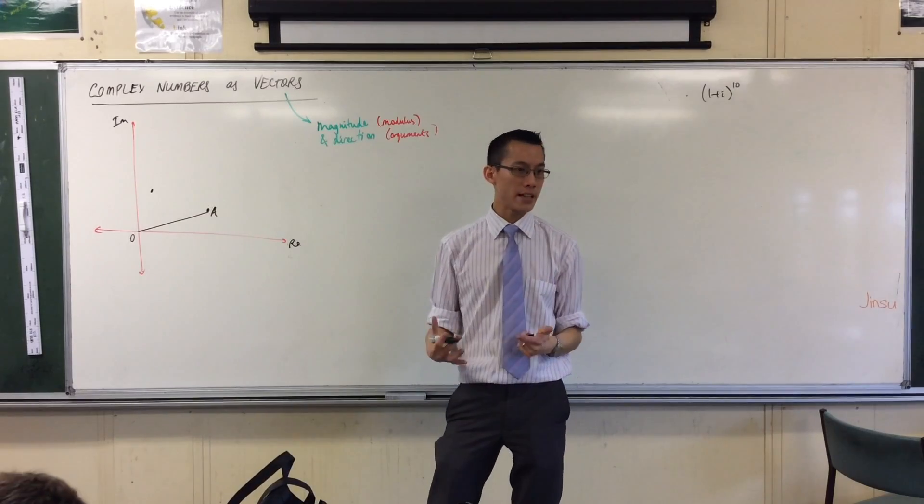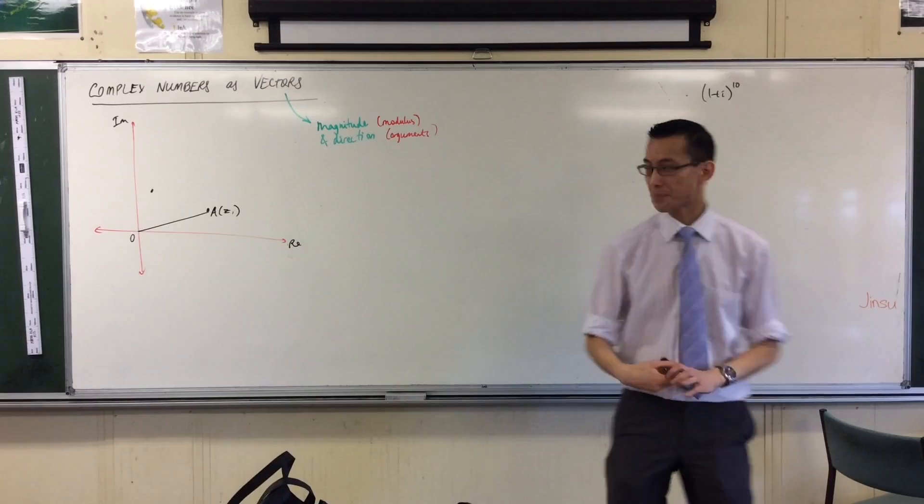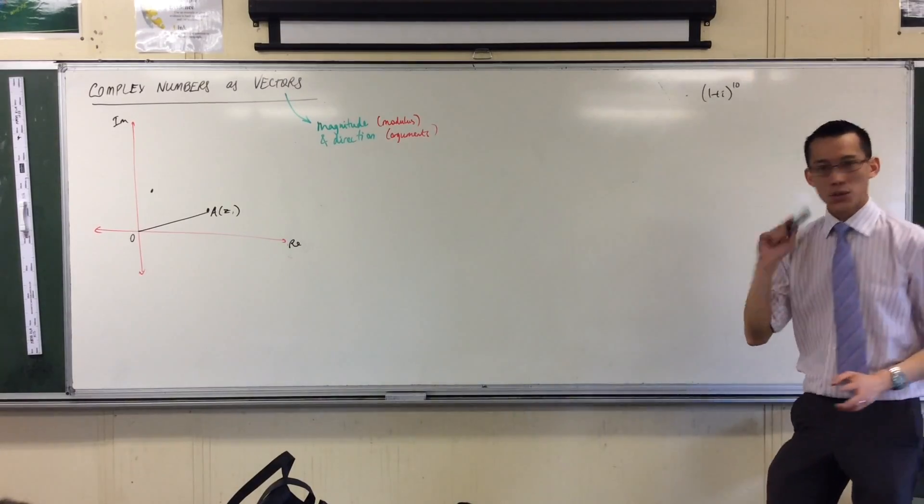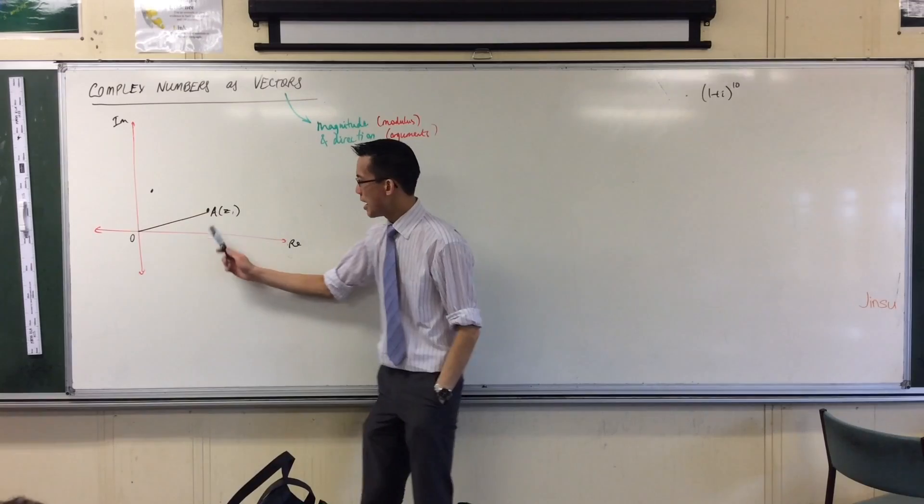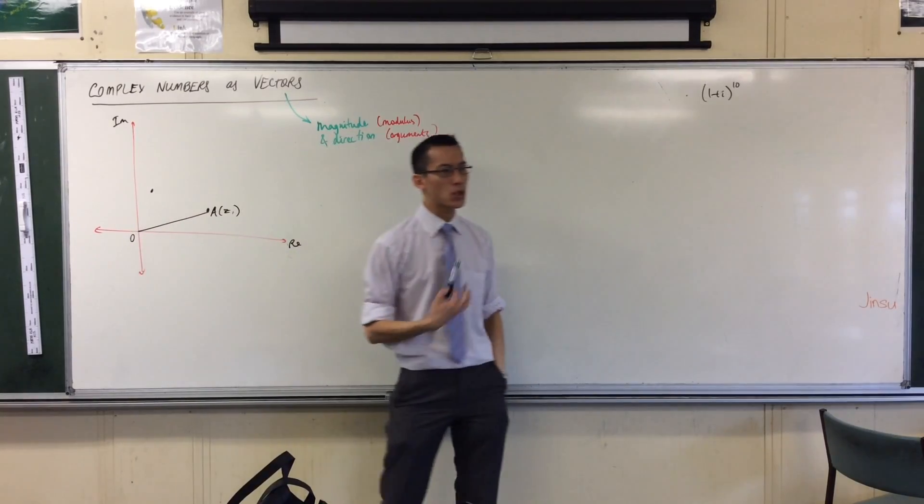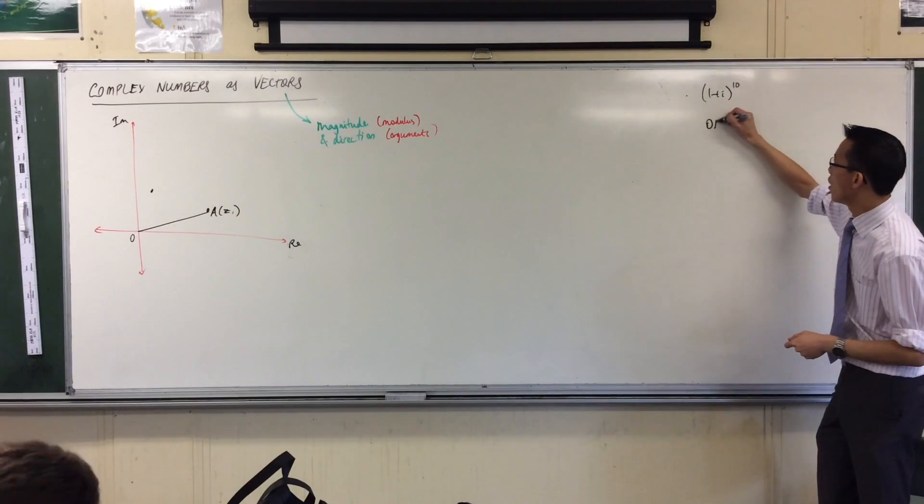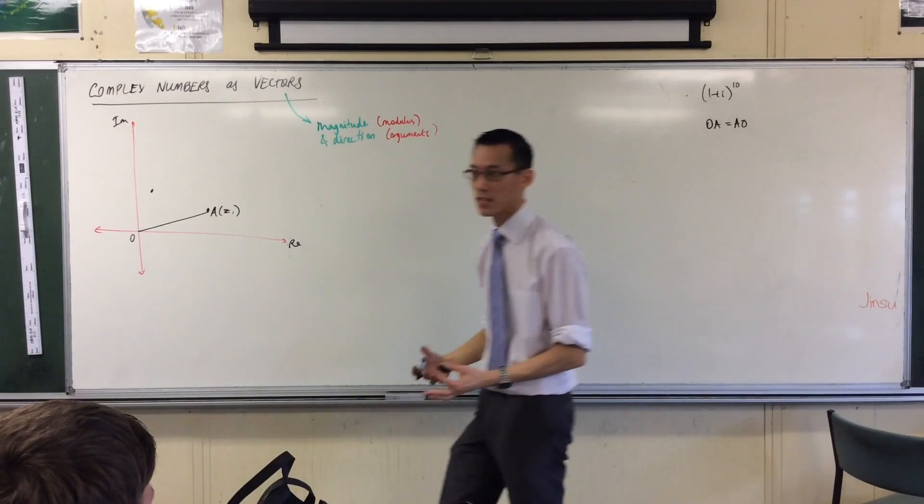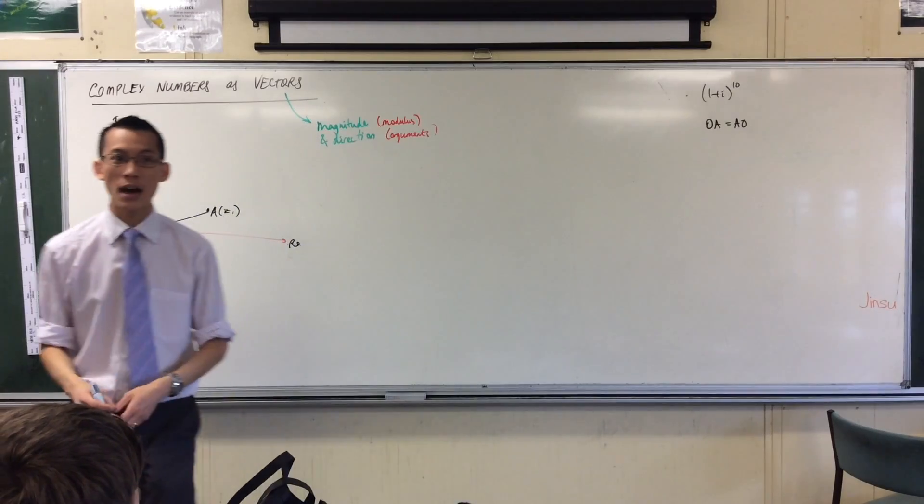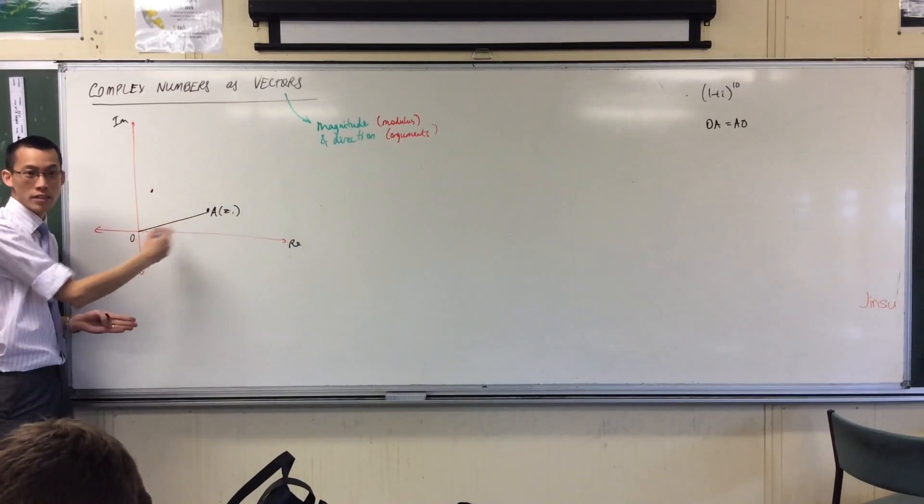But what it represents is my complex number. In this case, I need two of them. So we'll call this one Z1, as is our convention. So now, have a look at this, before we talk about this second guy here. In this case here, if I were talking about intervals, I could say OA equals AO, because they're the same interval just looked at from two different sides.